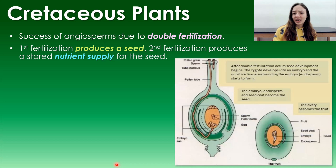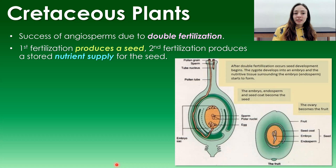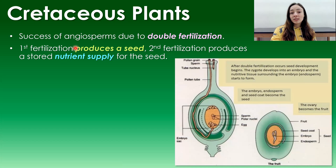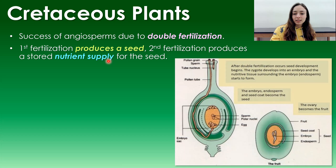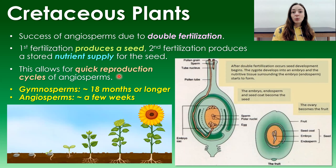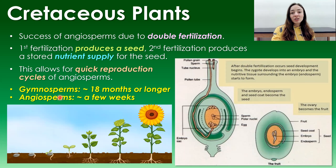The quick success of angiosperms was likely due to two major factors. The first was double fertilization: the first fertilization produces the seed, and the second produces a stored nutrient supply for that seed. This allowed for very quick reproduction cycles compared to gymnosperms, which have a reproductive cycle of around 18 months or longer, whereas angiosperms can reproduce in just a few weeks.